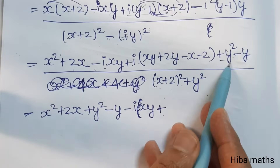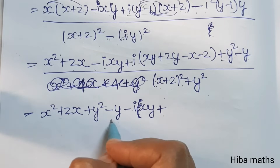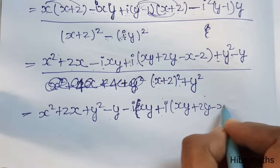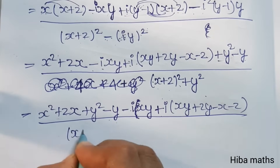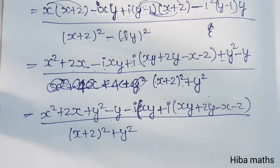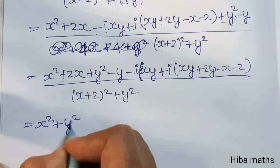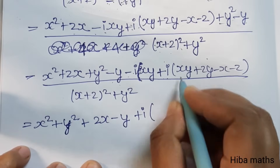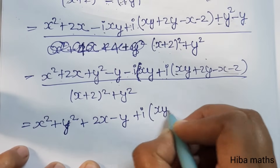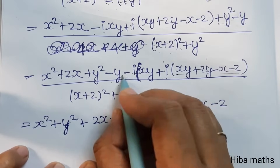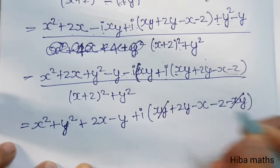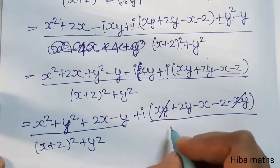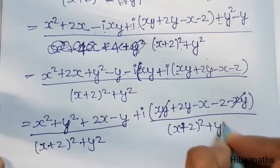So the real term is x square plus 2x plus y square minus y, and the imaginary term collects as: minus i·xy plus i·xy plus i(2y minus x minus 2), simplifying to i(2y minus x minus 2). The denominator is (x plus 2) whole square plus y square. So the expression equals (x square + y square + 2x minus y) plus i(2y minus x minus 2), all over (x plus 2) whole square plus y square.